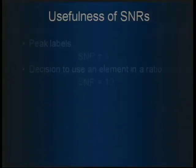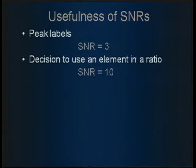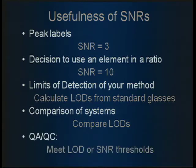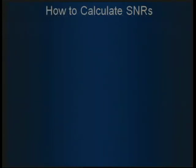To review the usefulness of signal-to-noise ratios for XRF: it helps you decide on peak labels and when to use those elements in semi-quantitative ratios. You can calculate limits of detection and compare those limits across systems, and for QA/QC checks you can meet LOD or SNR thresholds. Those are the reasons why you may want to calculate signal-to-noise ratios.